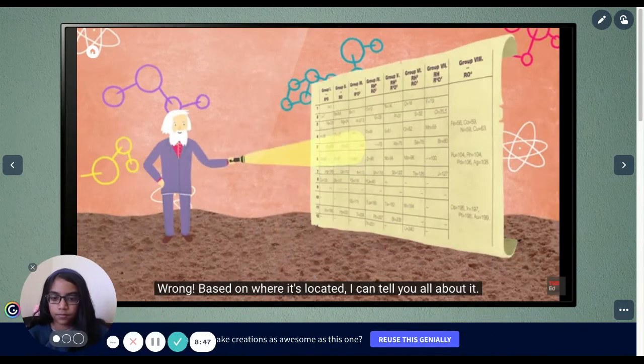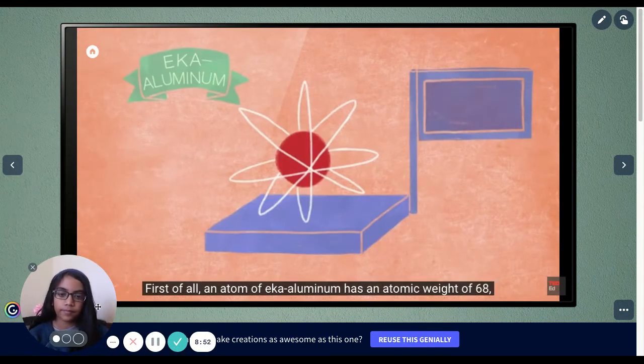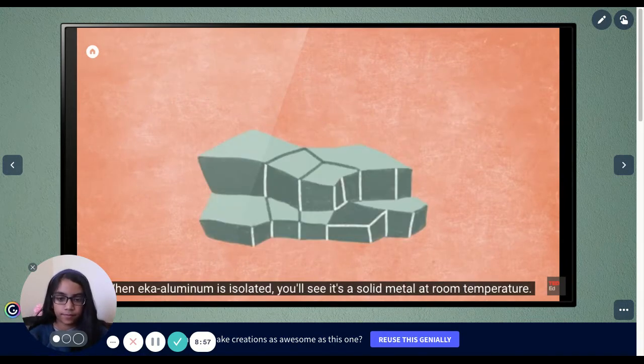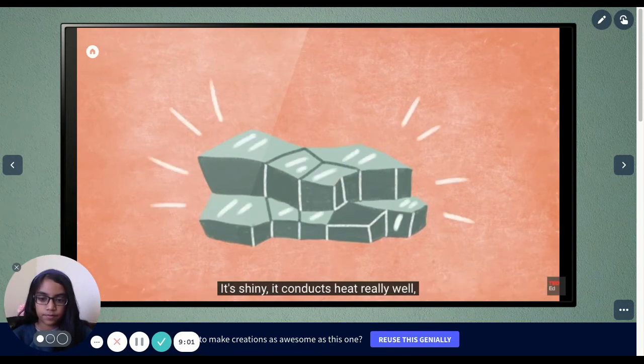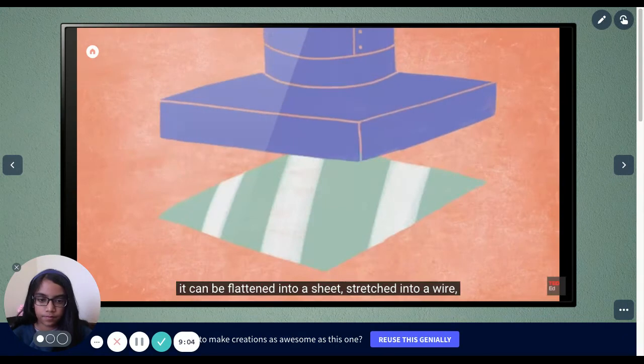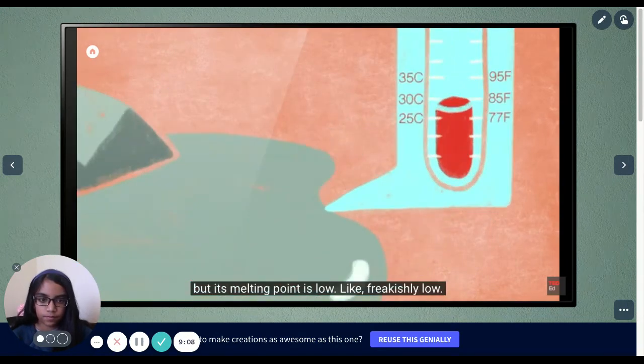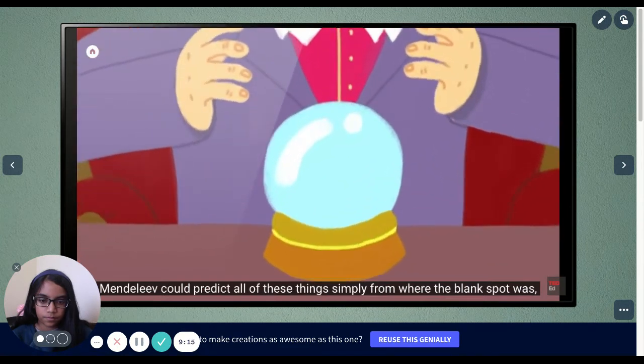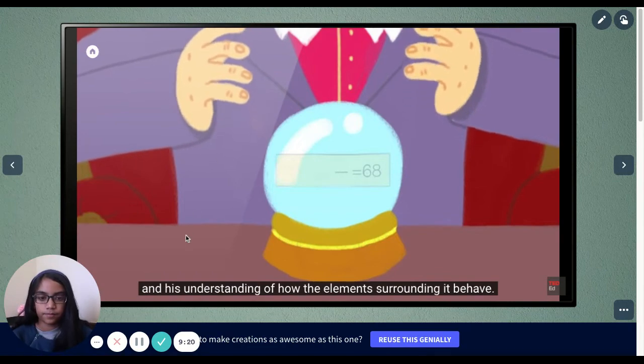Based on where it's located, I can tell you all about it. First of all, an atom of eka-aluminum has an atomic weight of 68, about 68 times heavier than a hydrogen atom. When eka-aluminum is isolated, you'll see it's a solid metal at room temperature. It's shiny, it conducts heat really well, it can be flattened into a sheet, stretched into a wire, but its melting point is low, like freakishly low. And a cubic centimeter of it will weigh six grams. Mendeleev could predict all of these things simply from where the white spot was, and his understanding of how the elements surrounding it behave.